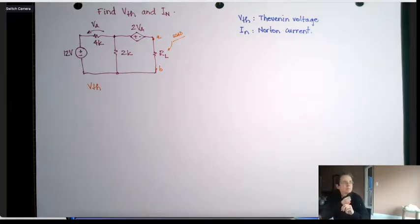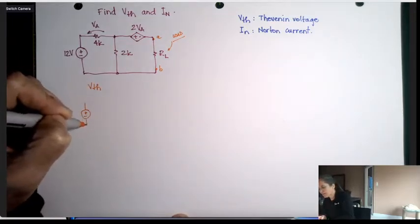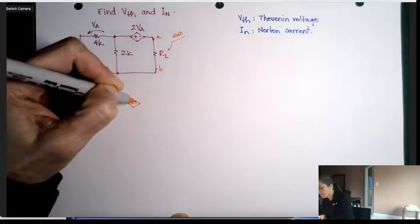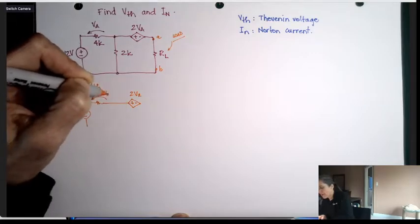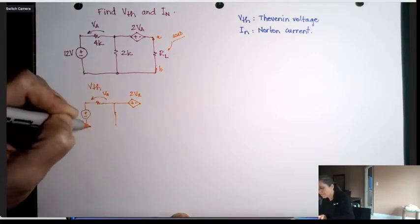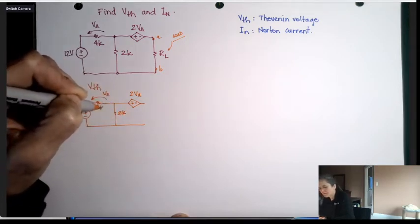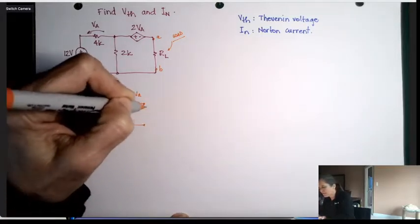For class you were asked to find the Thevenin or Norton resistance using the test source method. So that is up to you. I'm gonna draw the circuit that I'm expecting to have to solve for VTH. For VTH I leave the load off and I do not short, that is I open these two terminals A and B.